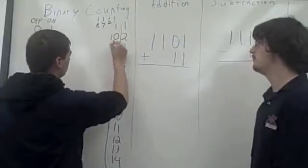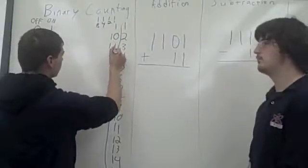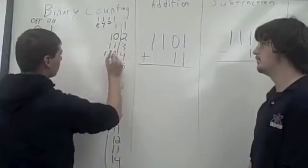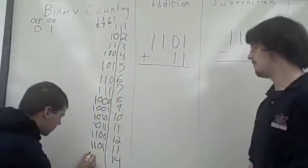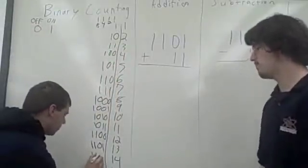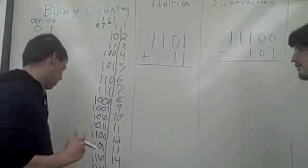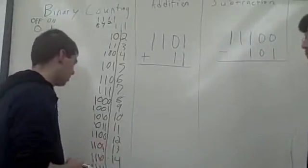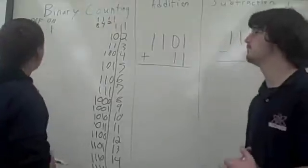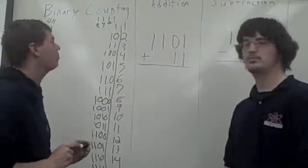So now we move on to 3: 1, 1. And 4: 1, 0, 0. Then 1, 0, 1 and 1, 1, 0. 0, 0, 0 until for however many numbers you have. So that is pretty much how to count in binary.